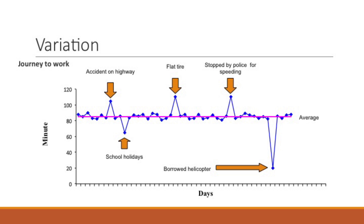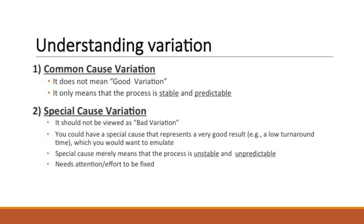So if you look at my average journey over time, it varies between let's say 20 minutes to get to work on the day I borrowed a helicopter and almost 120 minutes when I was stopped by police for speeding. This is showing how data varies over time. Common cause variation doesn't mean that it's good variation — it only means that the process is stable and predictable. Special cause variation, we don't want to confuse for bad variation. You could have a special cause that represents very good results.